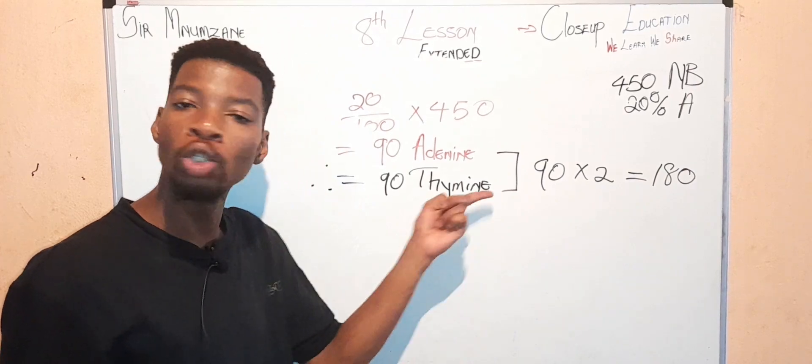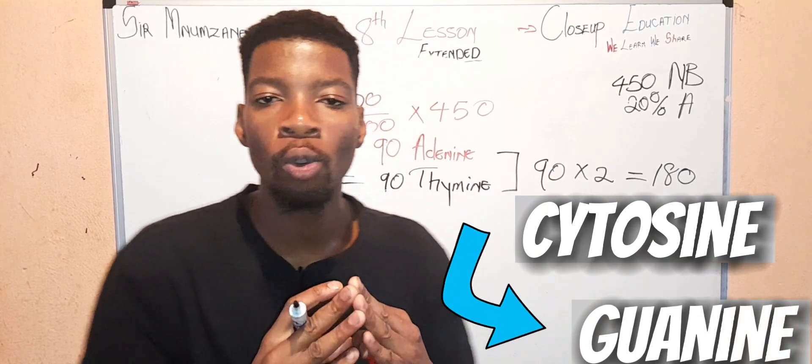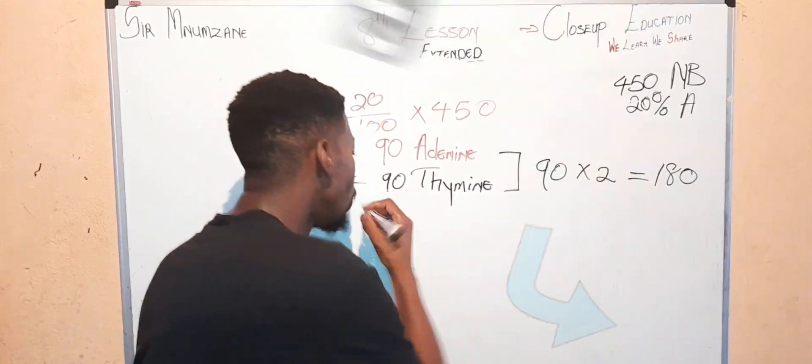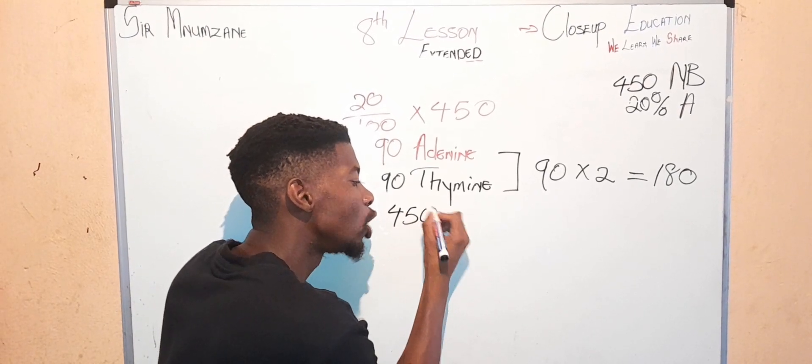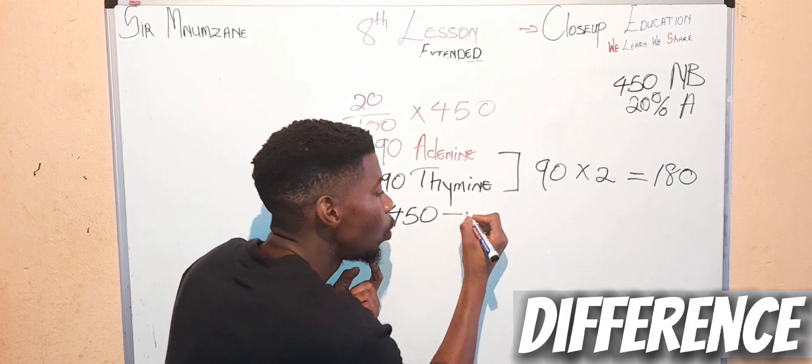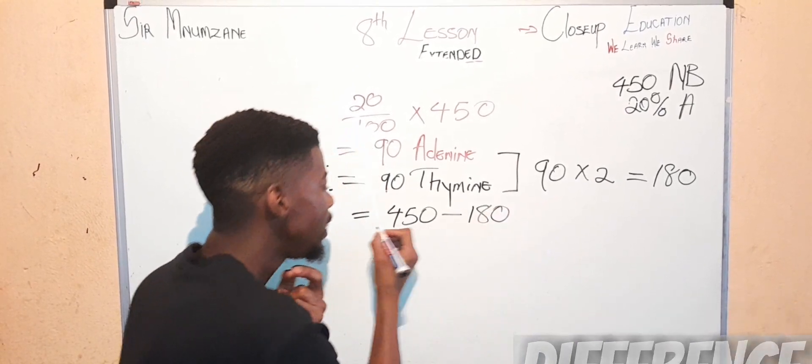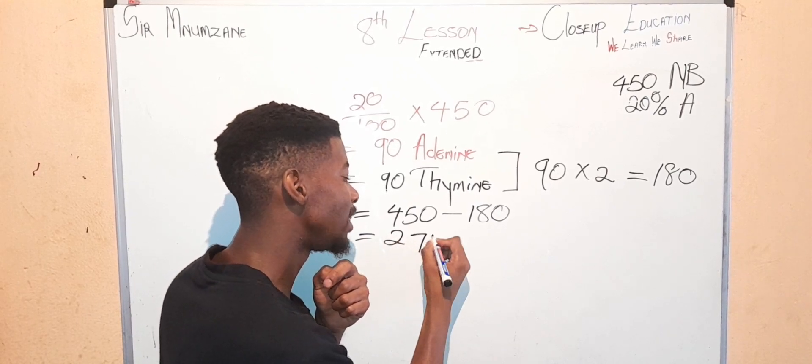So there are 180 in total, both of them. Our fourth step is to find the cytosine and the guanine. How do we find them? We take the total, 450, and subtract it with this 180, and our answer will be none other than 270.